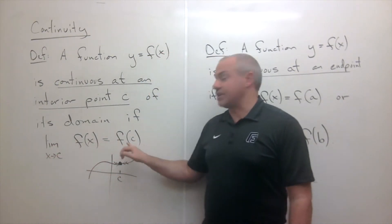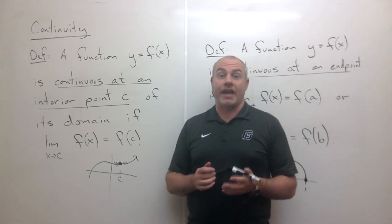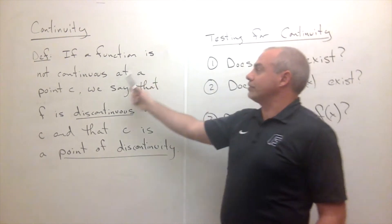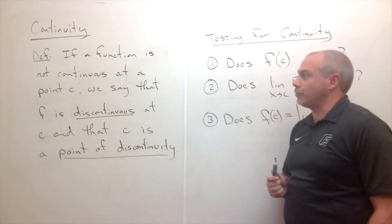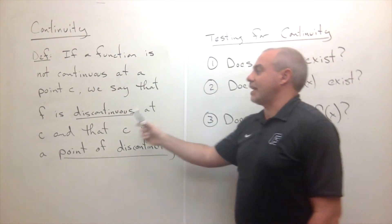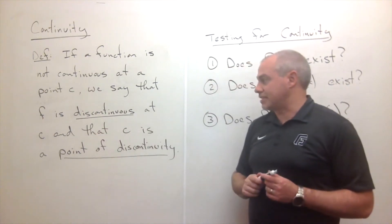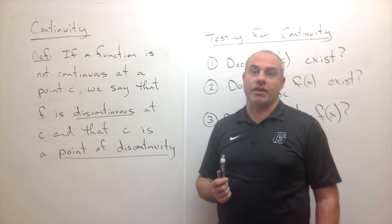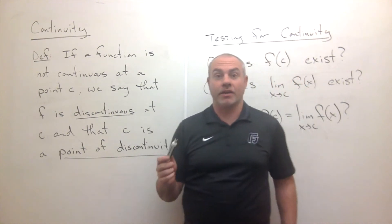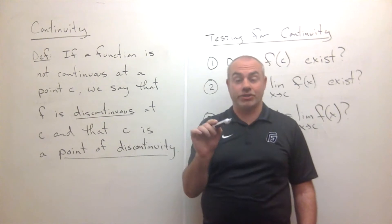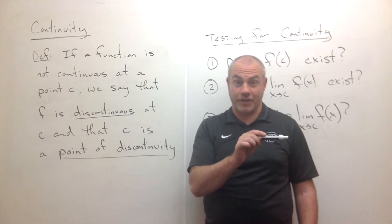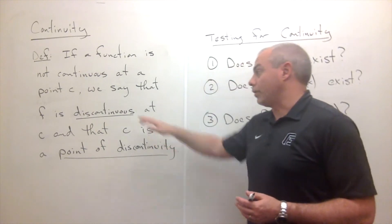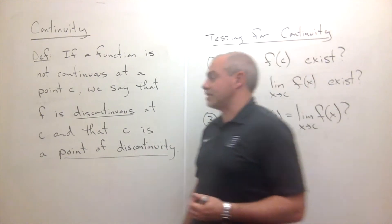Another definition: if a function is not continuous at a point c, then we say that f is discontinuous at c and that c is a point of discontinuity. So if there is some point where the limit of the function is not equal to the functional value, then we have what we call a discontinuity or a point of discontinuity.